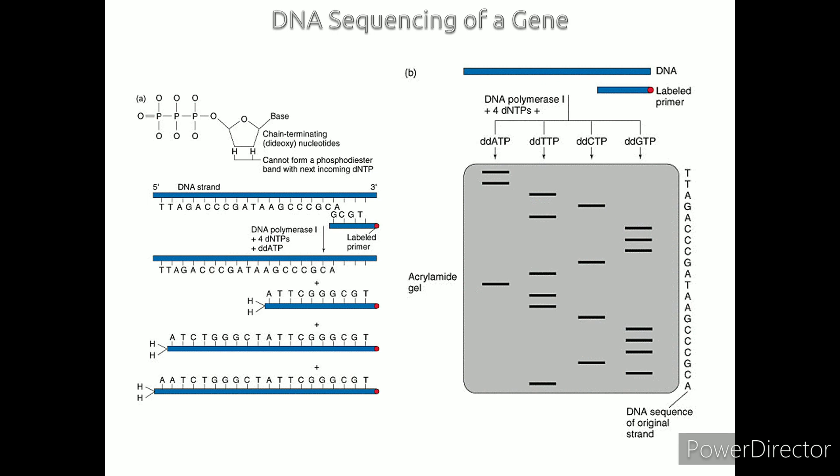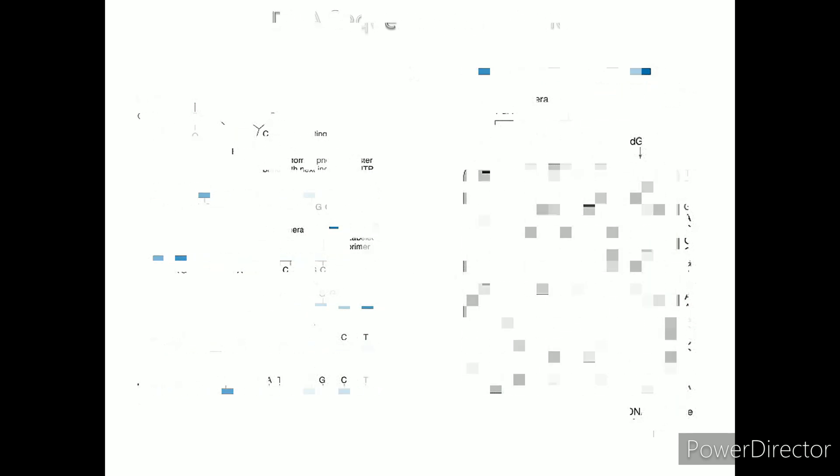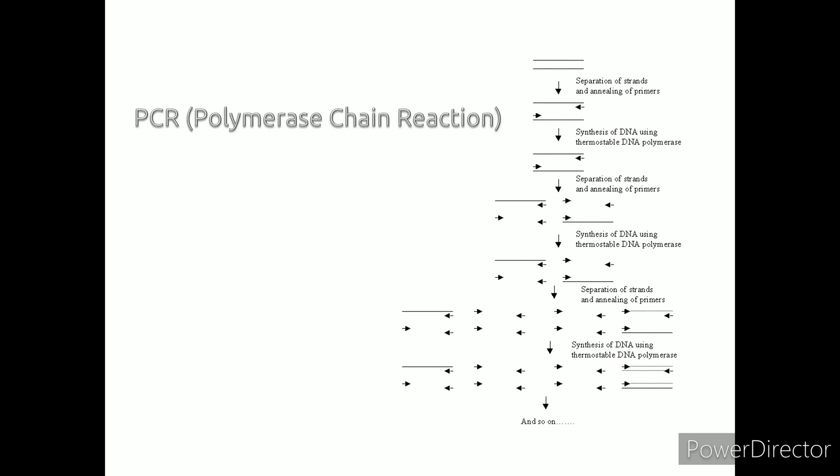The Sanger dideoxy method: the gene to be sequenced is used as a template for the synthesis of new DNA strands, each randomly terminating due to the incorporation of a chain-terminating dideoxynucleotide in four different reaction tubes. PCR, or polymerase chain reaction, allows the isolation of a specific segment of DNA from a small DNA sample using DNA primers at the end of the segment of interest.